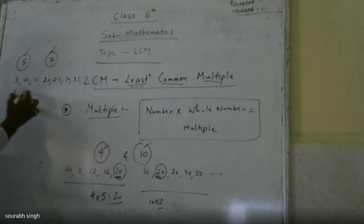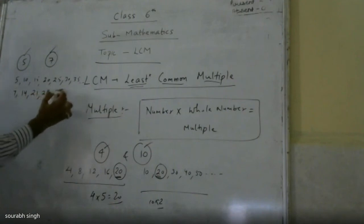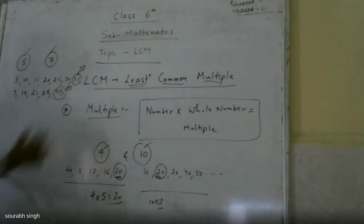Multiples of 7 are 7, 14, 21, 28, 35. Notice that 35 is the common multiple here.